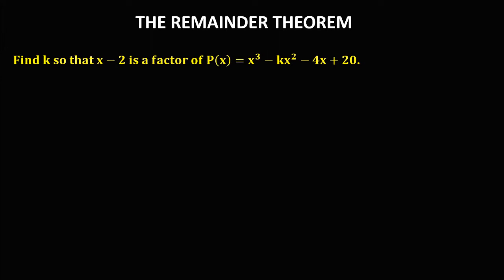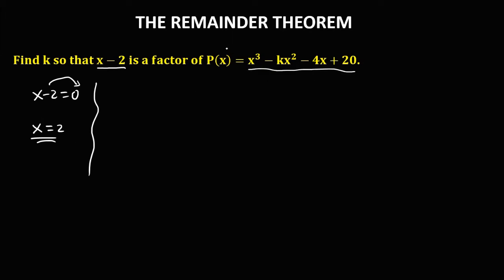For this next problem: find k so that x minus 2 is a factor of p of x, where p of x equals x to the power 3 minus k times x to the power 2 minus 4x plus 20. Again, equate x minus 2 to 0. Transpose the negative 2, so x is equal to positive 2. Then substitute the value of x into this equation, so we have p of 2.